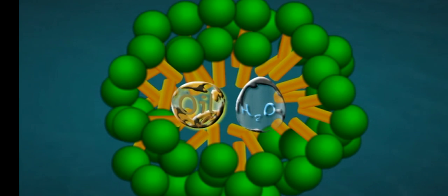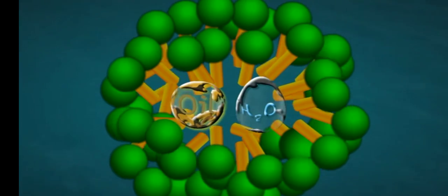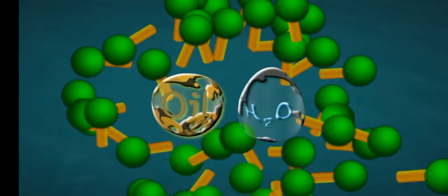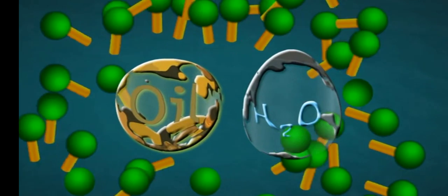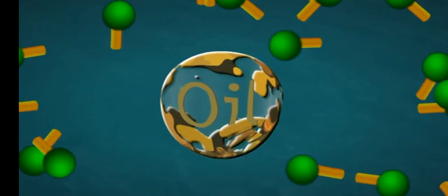Since the polar groups can interact with water, the oil droplet surrounded by stearate ions is now pulled in water and hence removed from dirty surface. Since similar charges repel each other, the oil droplets break up and form small droplets or globules.